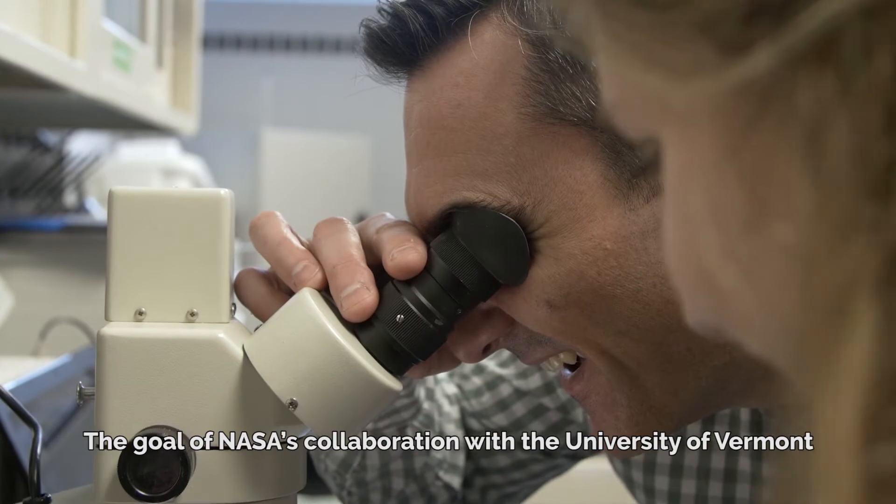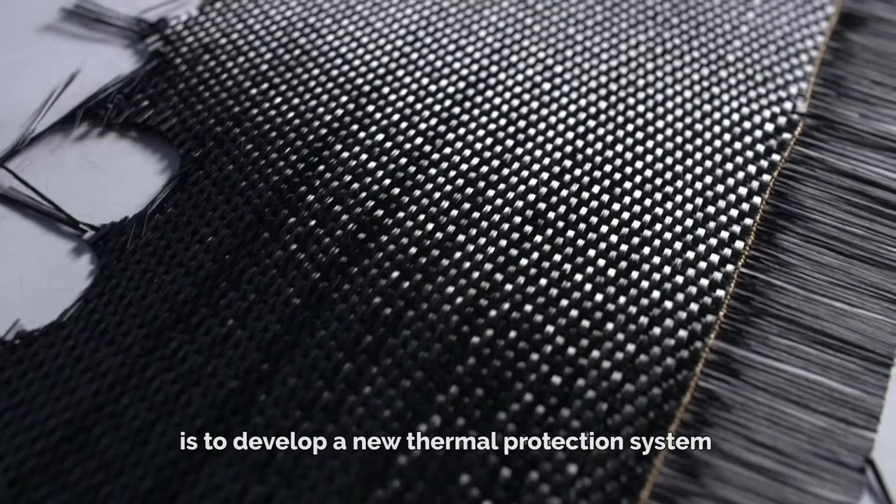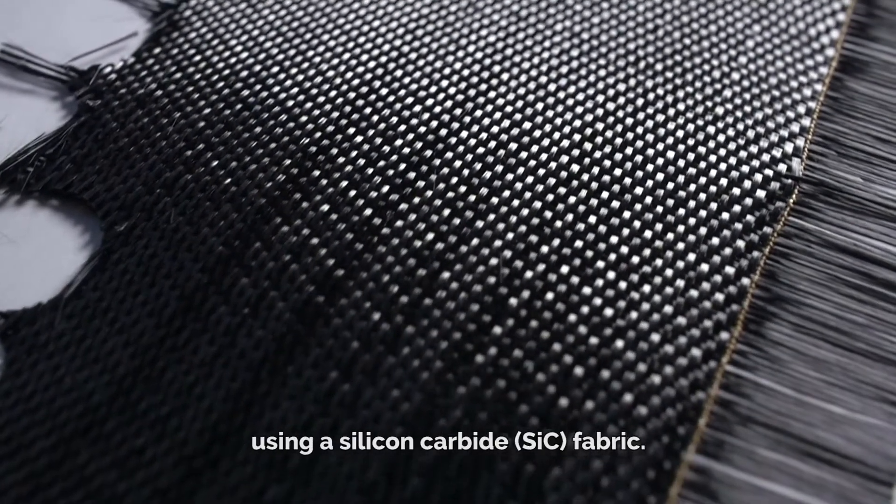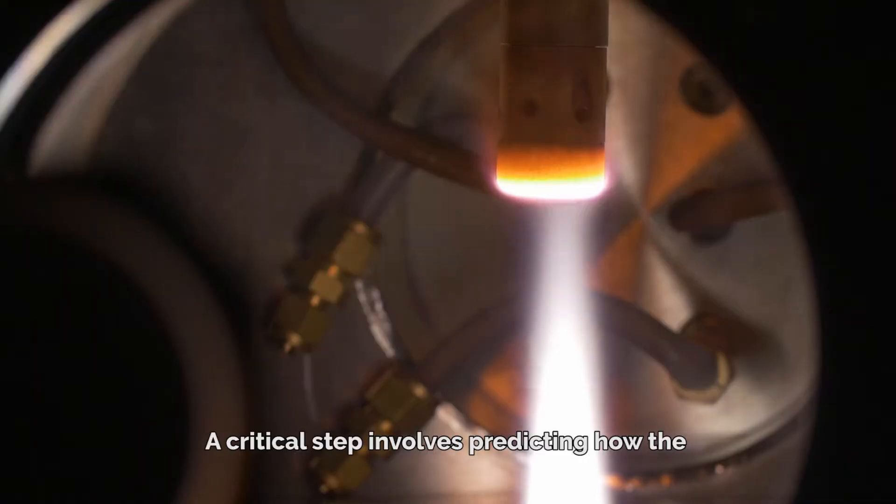The goal of NASA's collaboration with the University of Vermont is to develop a new thermal protection system using a silicon carbide fabric. A critical step involves predicting how the material's characteristics will function in space.